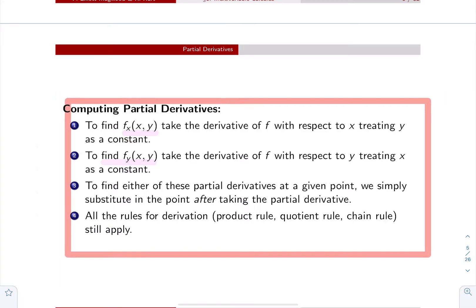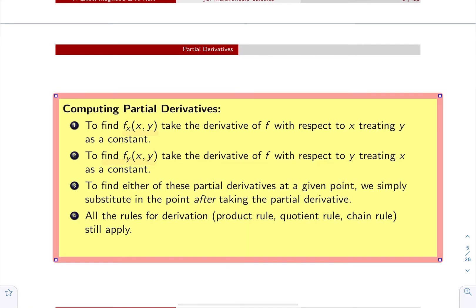So how do we compute partial derivatives? To find f_x(x, y) — the partial derivative of f with respect to x — there are no new rules. You take the derivative of f with respect to x as if the variable y is a constant, using rules of differentiation from one-variable calculus. The y is simply a constant or a coefficient depending on where it appears. To find the partial derivative with respect to y, the roles are flipped: all x's are constants or coefficients, and you apply the rules of differentiation where the variable is y.